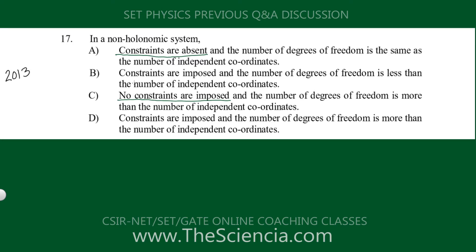If there are no constraints, how can we call the system a non-holonomic system? A system is non-holonomic only when there is a non-holonomic constraint. So option A is wrong and option C is wrong. Now we have two remaining options, B and D. In option B, the number of degrees of freedom is less than the number of independent coordinates, and in option D, degrees of freedom is more than the number of coordinates.